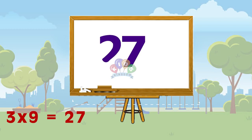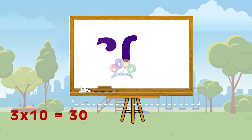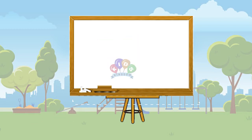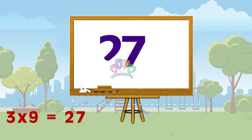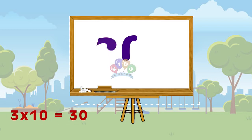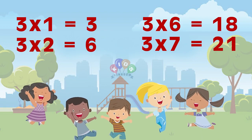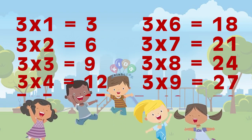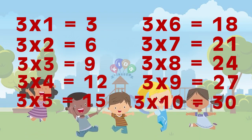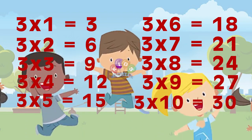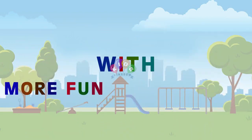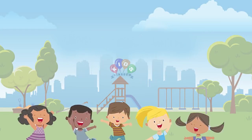Three nines are twenty-seven, three tens are thirty. Three nines are twenty-seven, three tens are thirty. Come on children, let us learn, let us learn with more fun.